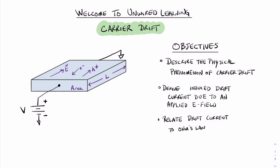Welcome to Unwired Learning. In this video, we're going to talk about carrier drift in a semiconductor. The goals for this video are to describe the physical phenomenon of carrier drift, derive an equation for induced drift current due to an electric field, and thirdly, to relate that equation of drift current to Ohm's law.